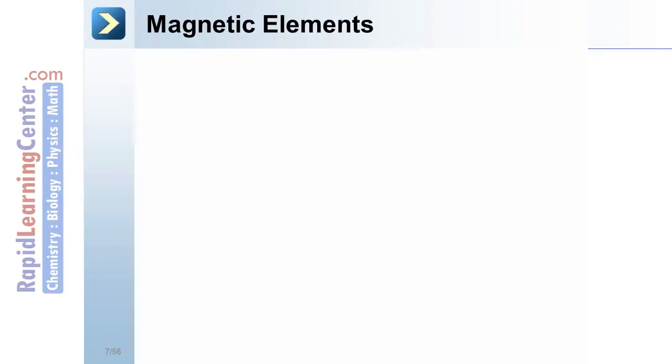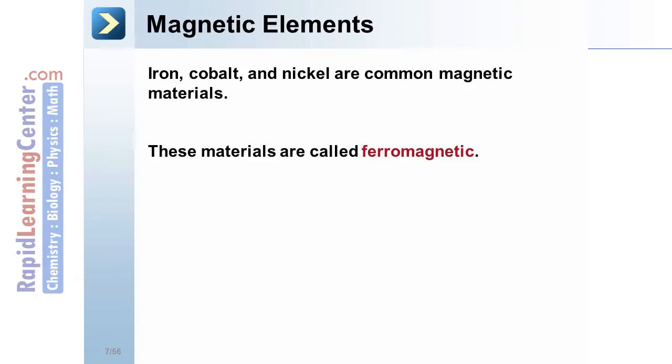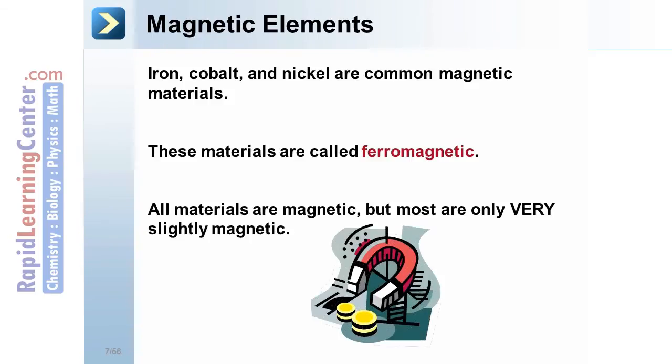Magnetic Elements: Iron, cobalt, and nickel are commonly magnetized materials. These materials are called ferromagnetic. All materials are somewhat magnetic, but most are only very slightly magnetic.